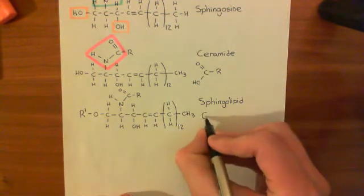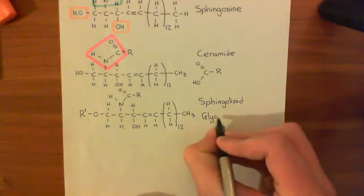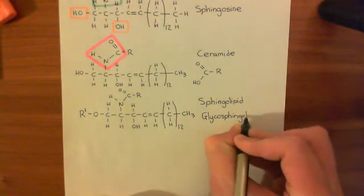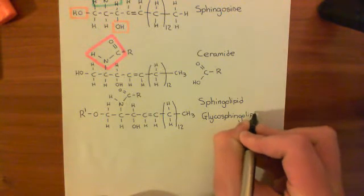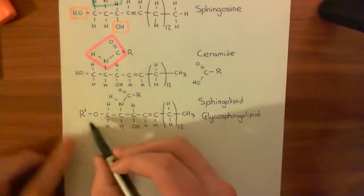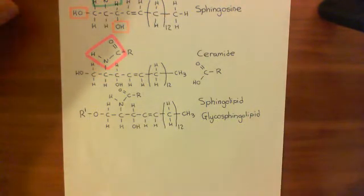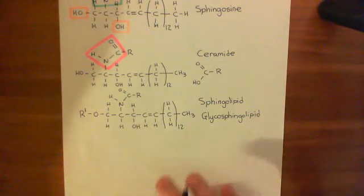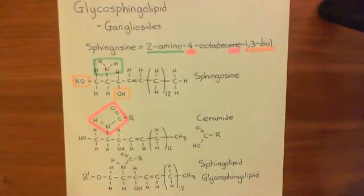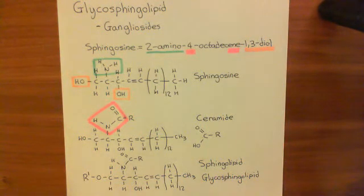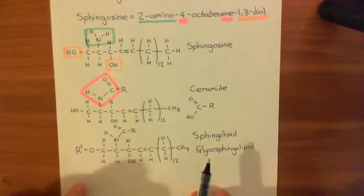So what's a glycosphingolipid? A glycosphingolipid means that the R group added onto the hydroxyl of the first carbon is a sugar structure. Gangliosides are a subset of glycosphingolipids — they are a specific sort of glycosphingolipid with a specific R prime group in that position.